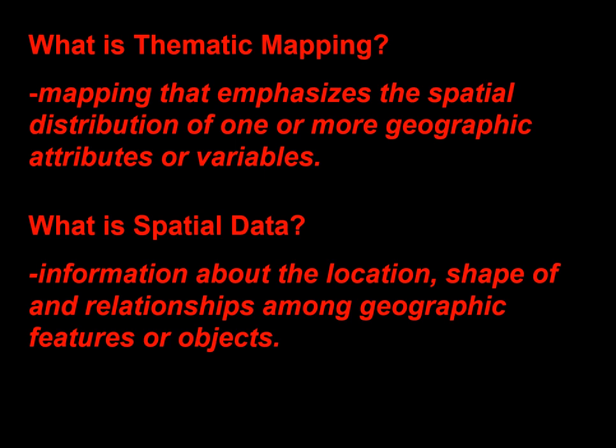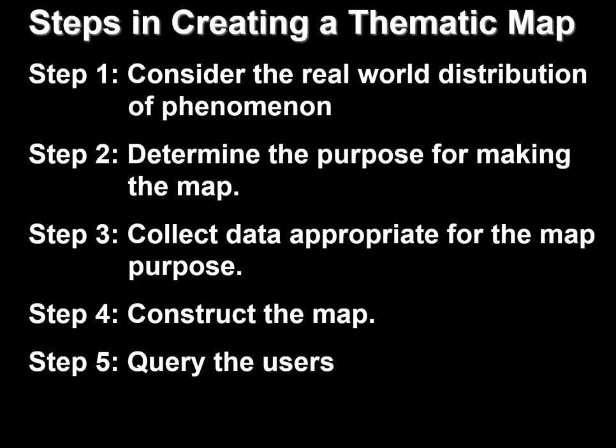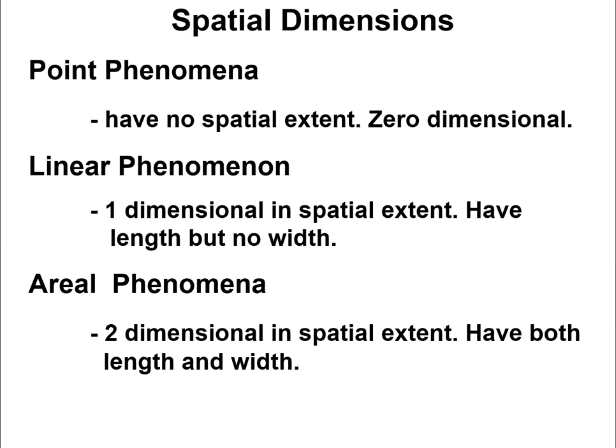What is spatial data? Spatial data is the information about the location, shape, and relationships among geographic features or objects — where is it located, and how is it related in space to something else around it? When you go to create a thematic map, the main steps are: consider how the data is distributed across that location, think about the purpose of the map, collect the data you need, make the map, and then ask users before you publish it — can you read this? Does it make sense? What do you think of the colors and symbols?